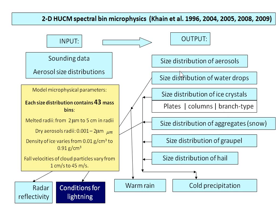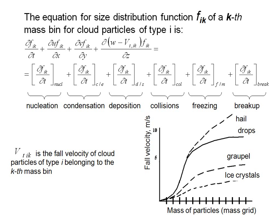As a result, we calculate warm rain, cold rain, conditions for lightning, and other parameters. The input for us is initial atmospheric sounding and size distributions of aerosols with their chemical composition.